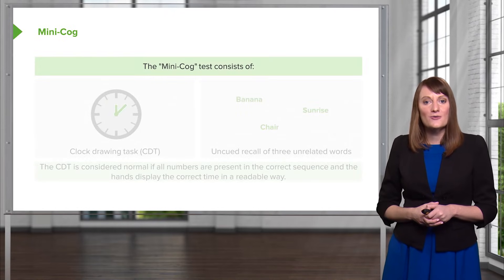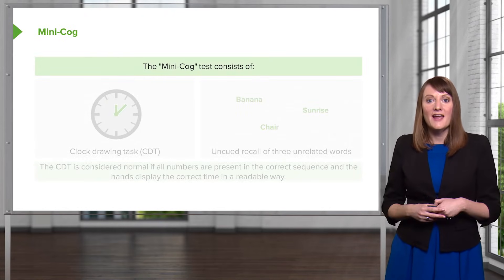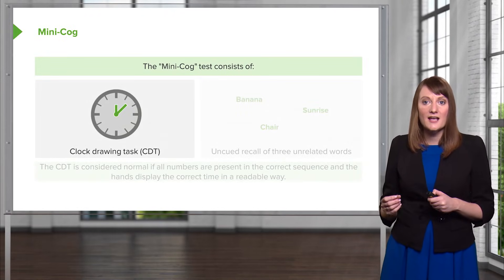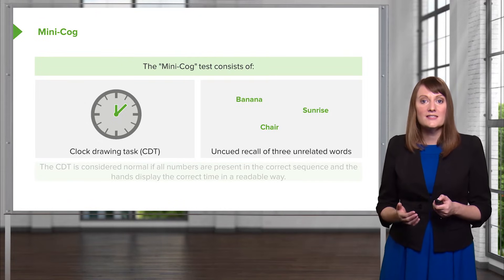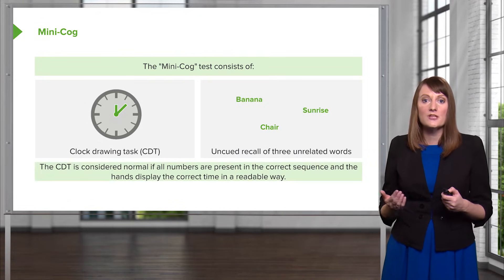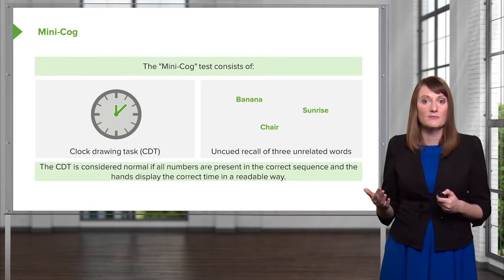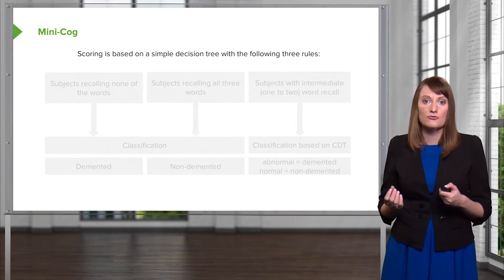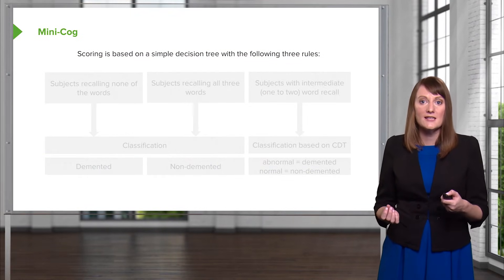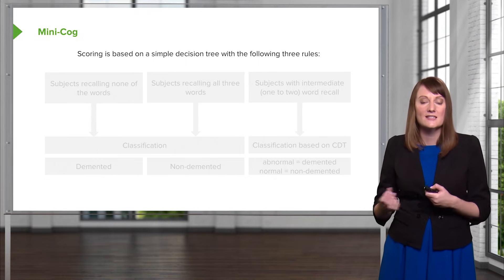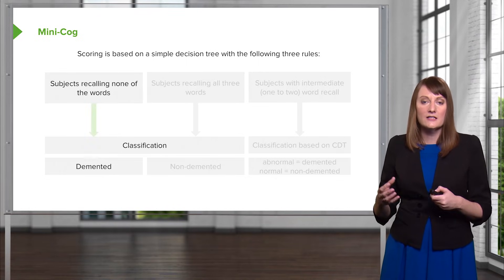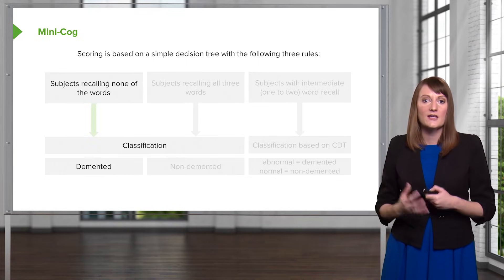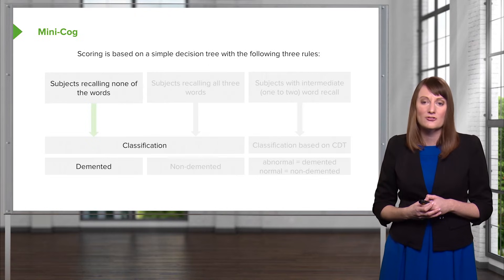There's also a test called the MINI COG, and this is a clock drawing test and also a test of recall. This can be a really quick way to assess whether or not somebody's having some cognitive trouble. The clock drawing test is a great way to really see if people are able to connect a sequence of ideas and strategies in a goal-oriented, task-driven way.